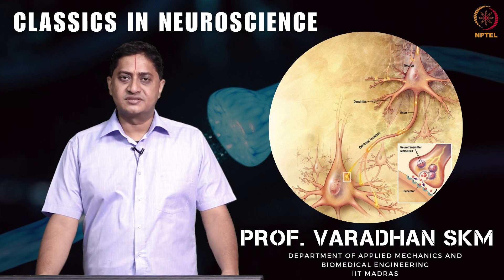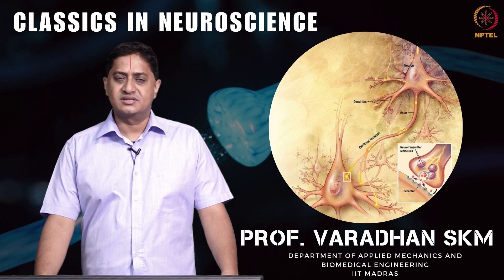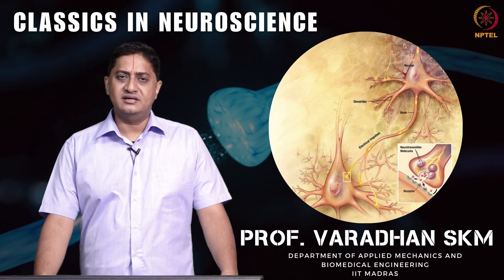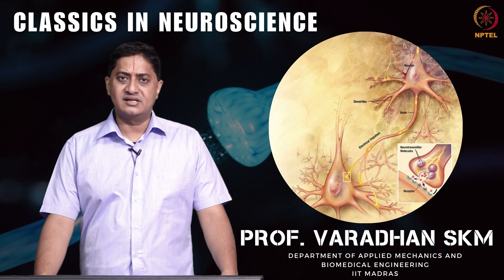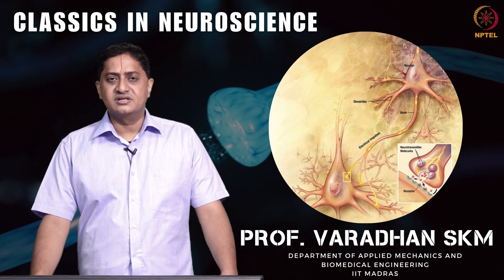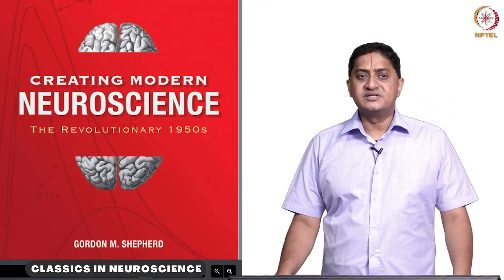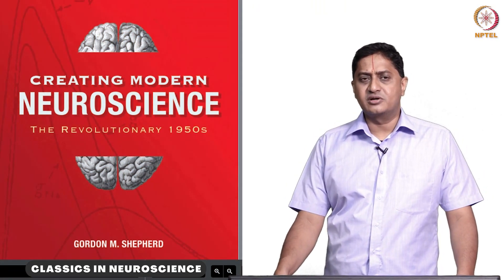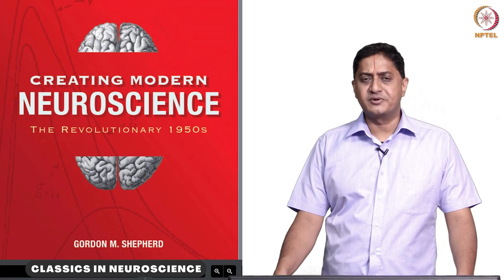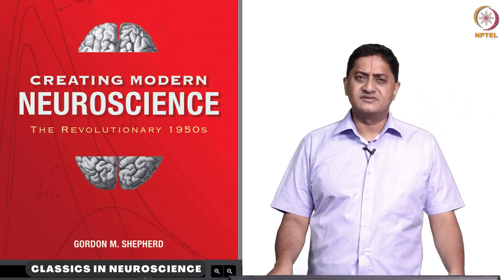Welcome to this course on classics in neuroscience. In this course, we will be studying historical developments that led to the glorious progress in the field of neuroscience. In particular, we will be focusing on the decade of 1950 to 1960. For our reference, we will be using this textbook, Creating Modern Neuroscience by Gordon Shepherd. Essentially, this course is an expansion and a recitation of this book.